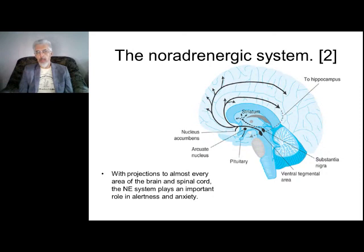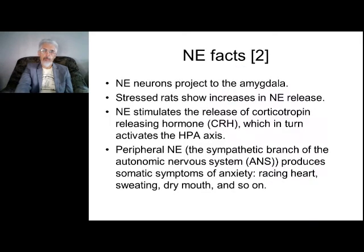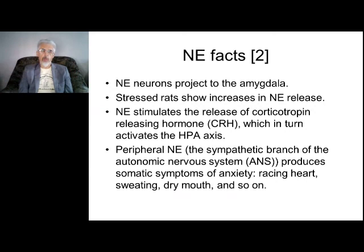Next type of system: the noradrenergic system. This system has very wide projections in the brain. Norepinephrine has projections into the amygdala, and as a result many drugs that reduce anxiety symptoms influence norepinephrine. Norepinephrine stimulates the release of corticotropin-releasing hormone, which has a very important role in stress — in fight-or-flight behavior.